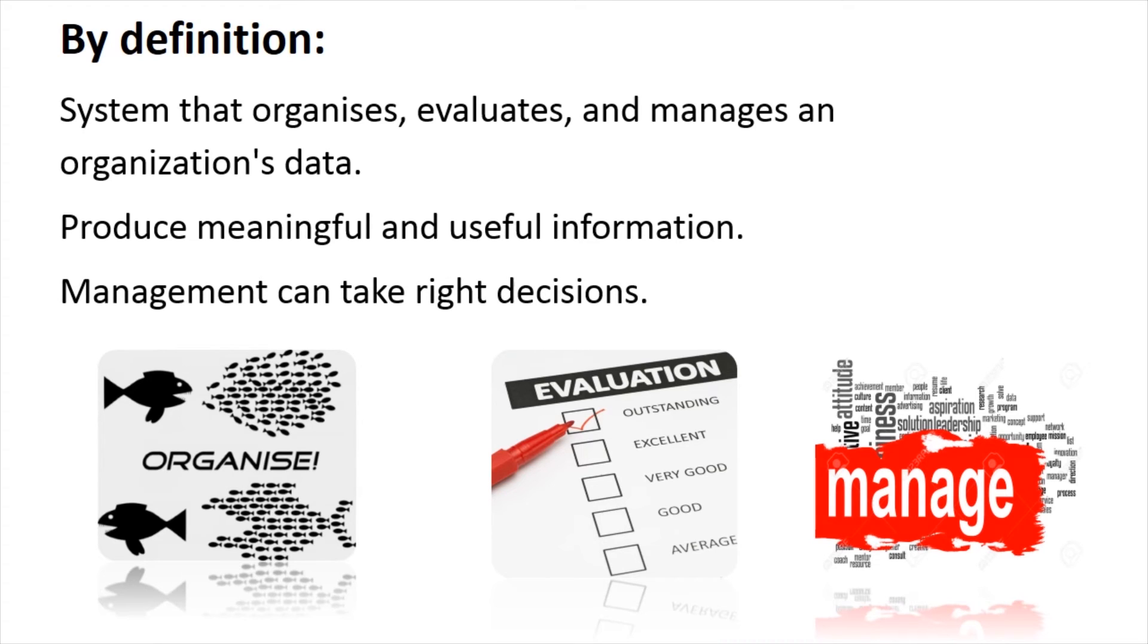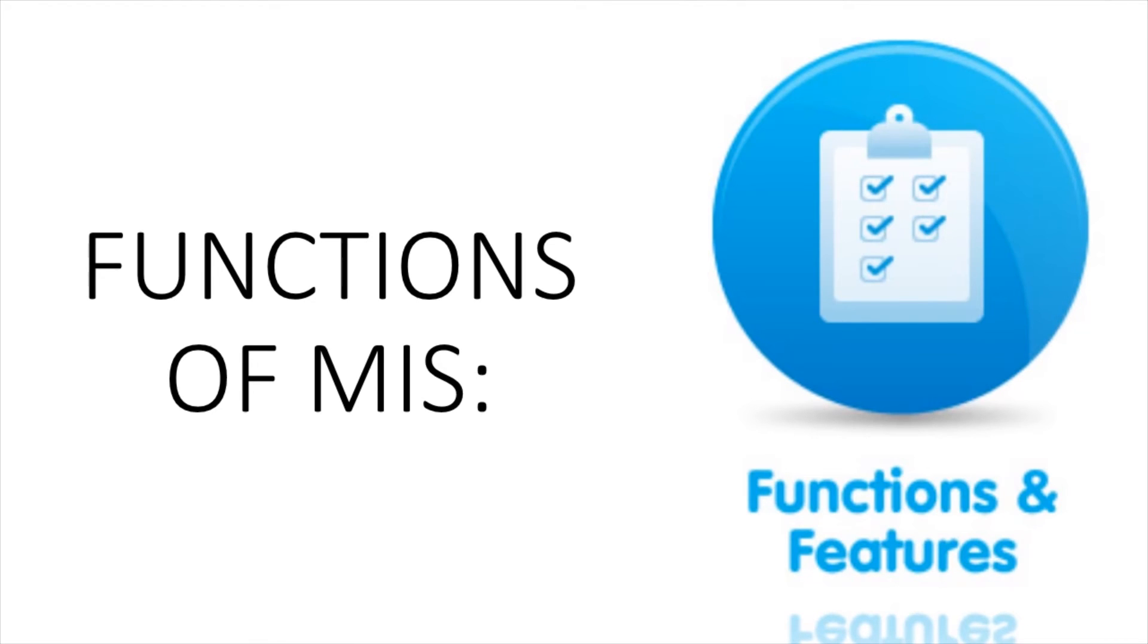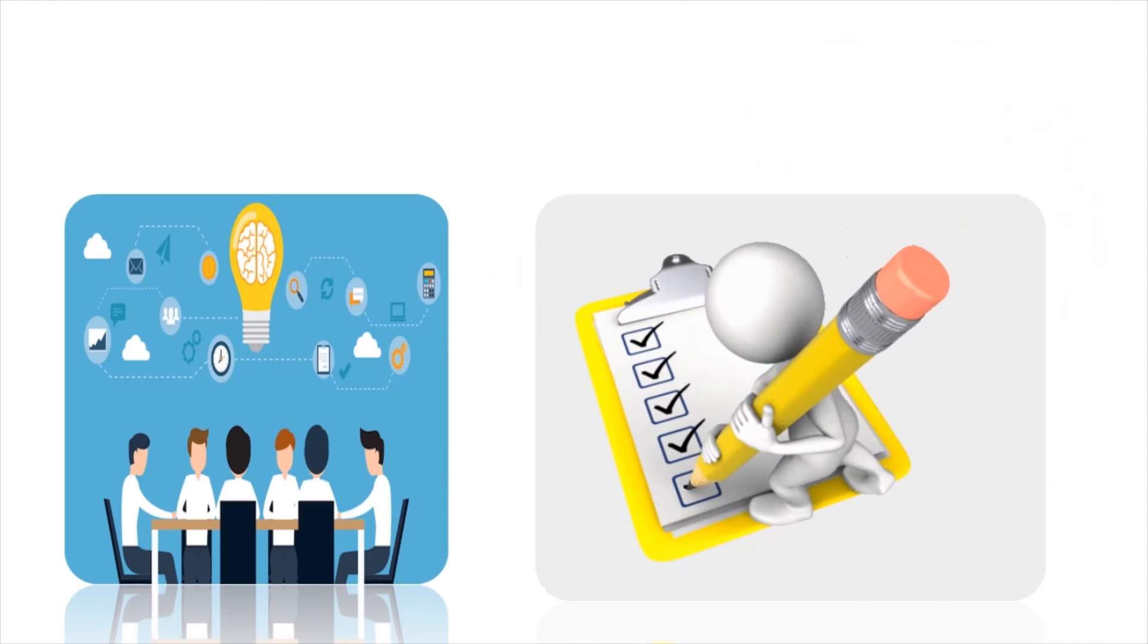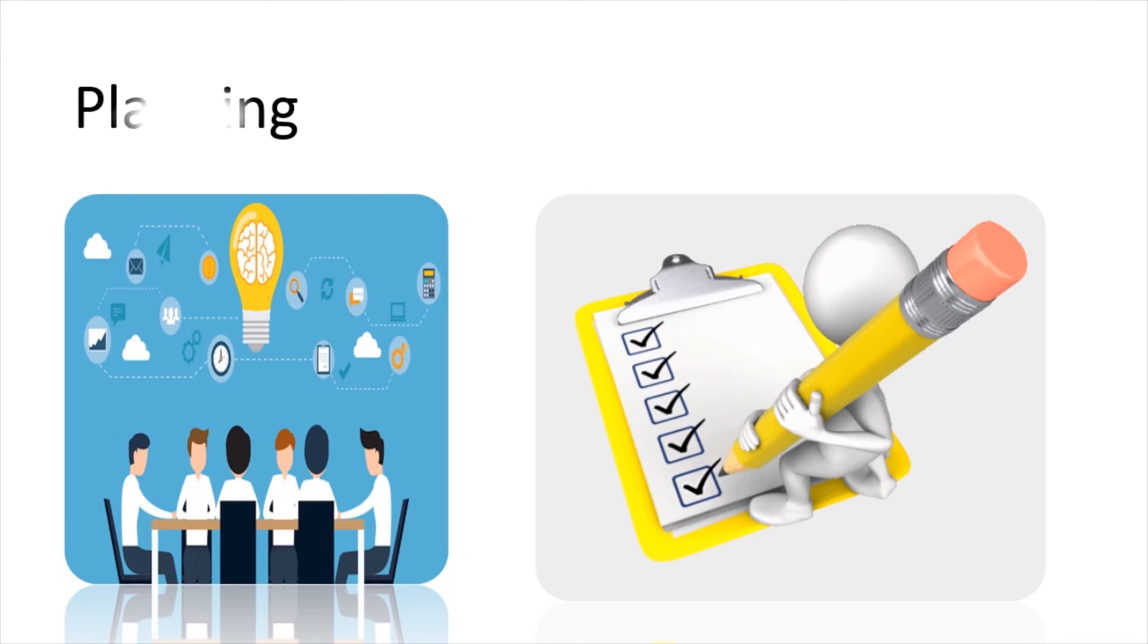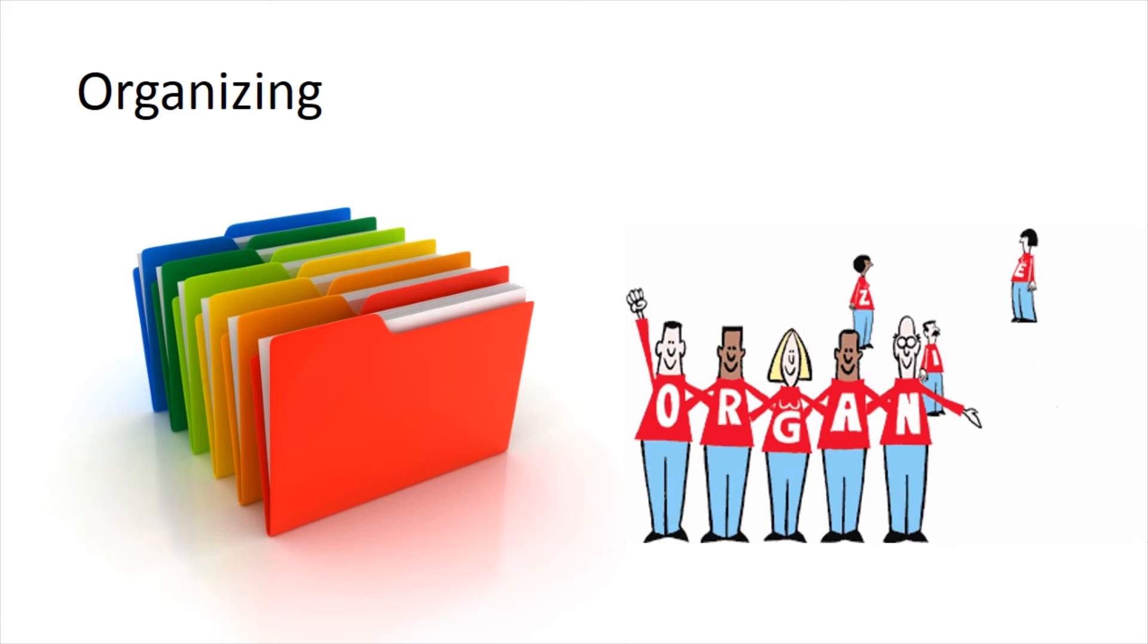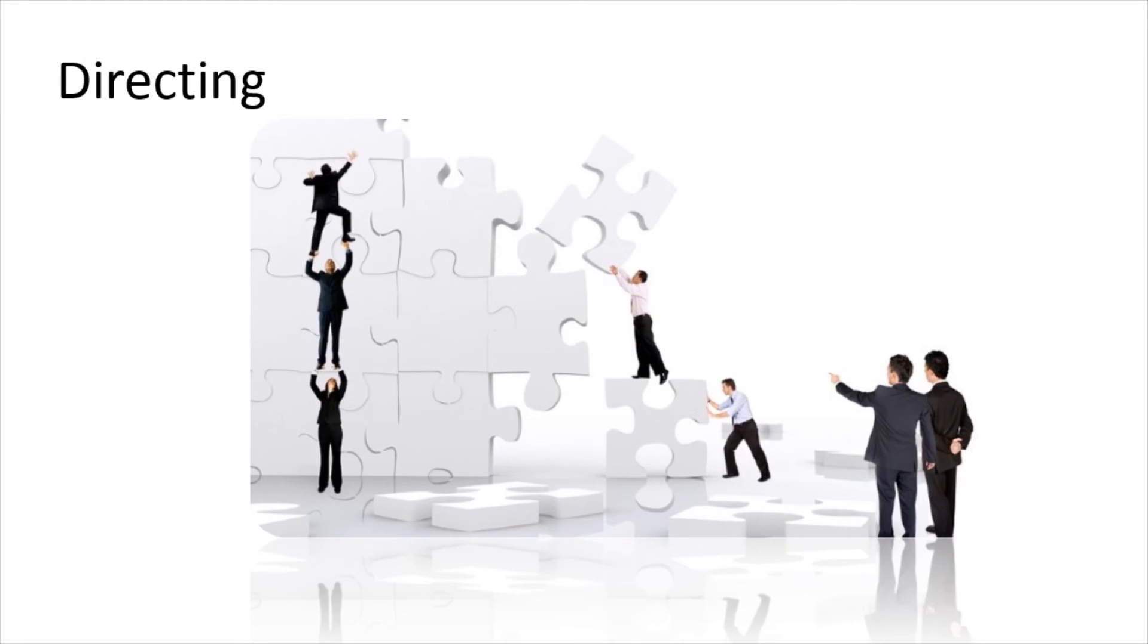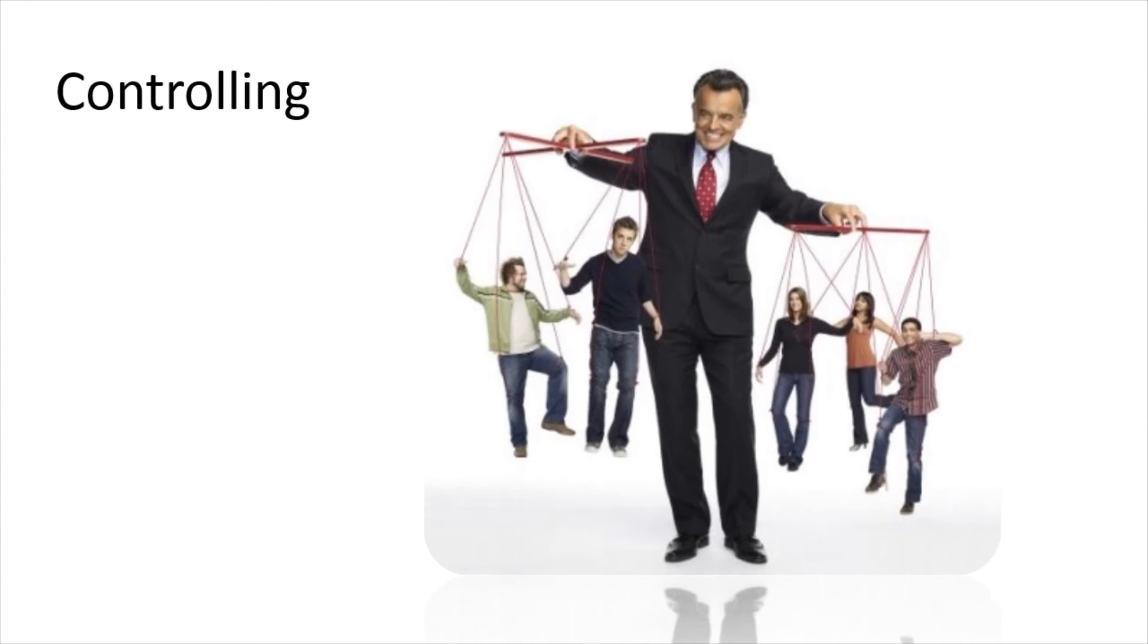The various functions performed by management information system in an organization are planning, organizing, staffing, directing, and controlling. We would be learning about them in detail.